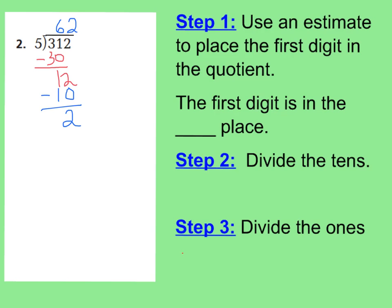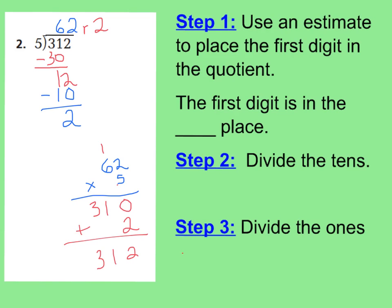Now let's do what our essential question is about — how we can check our work. The way that we check our work is multiplication, because the opposite of division is multiplication. So I can take 62 times 5, then add my remainder, and that should equal 312. Let's check it together: 5 times 2 ones is 10 ones. 5 times 6 tens is 30 tens, plus one more will be 31 tens. Therefore, we have 310. But I have 312, because I have a remainder of 2 to add to my 310. So 310 plus my remainder of 2 gives me 312 — my dividend.